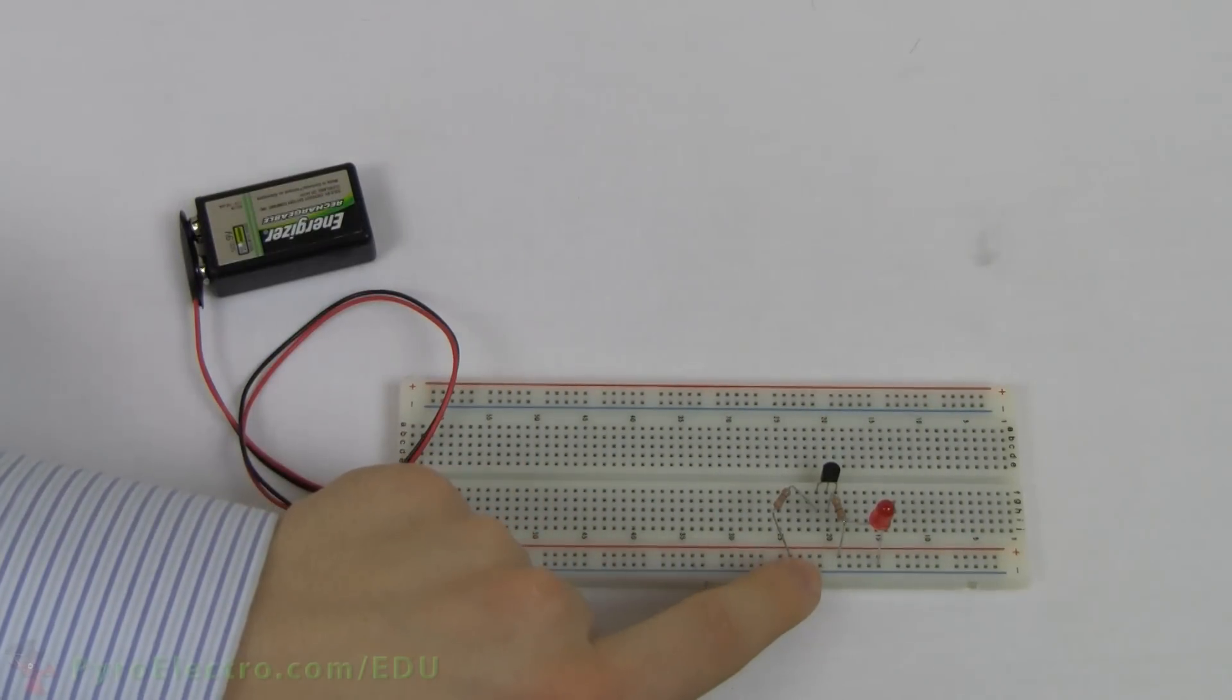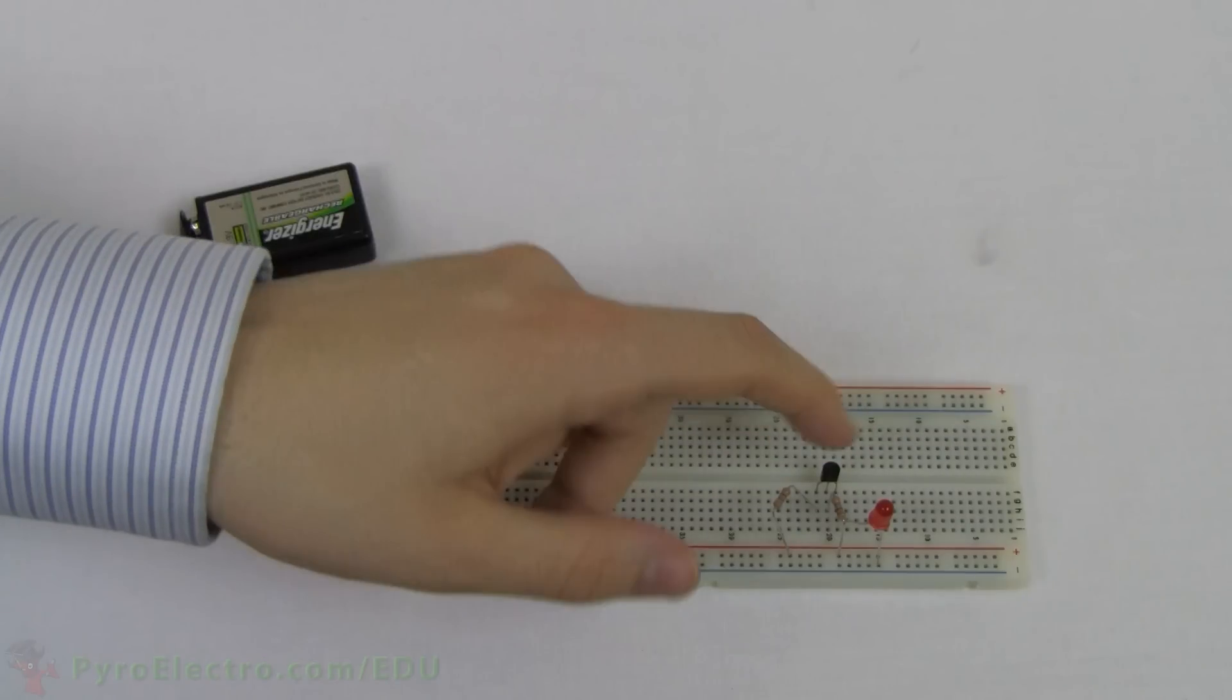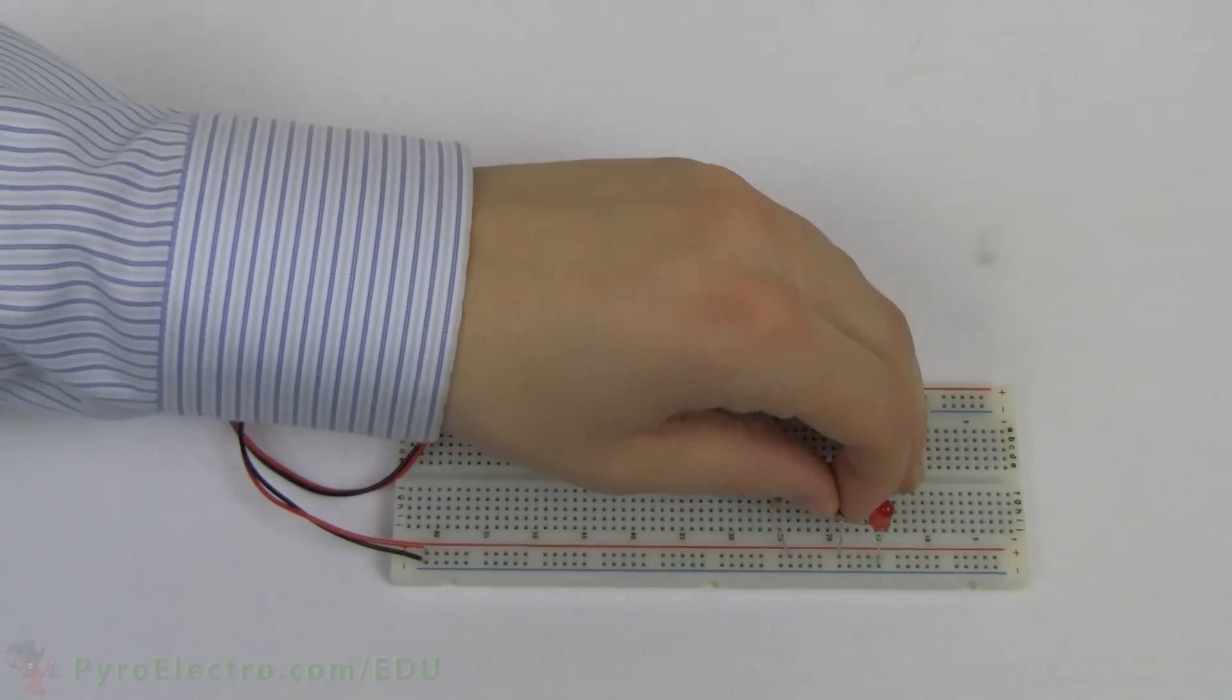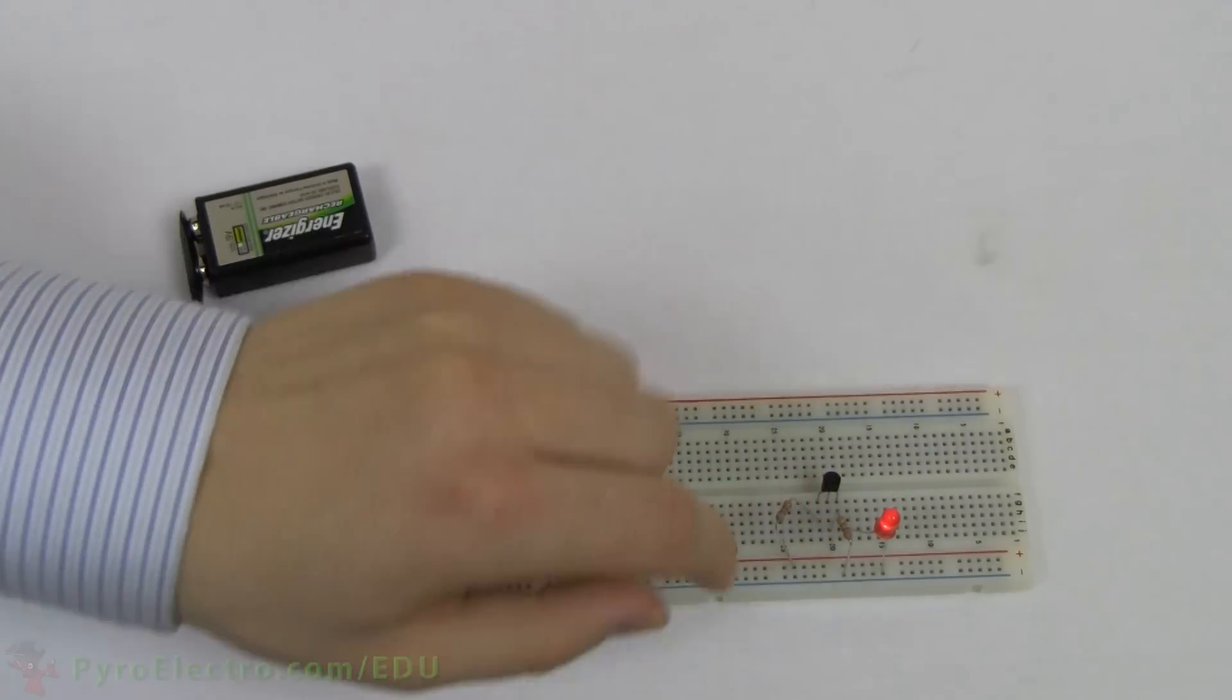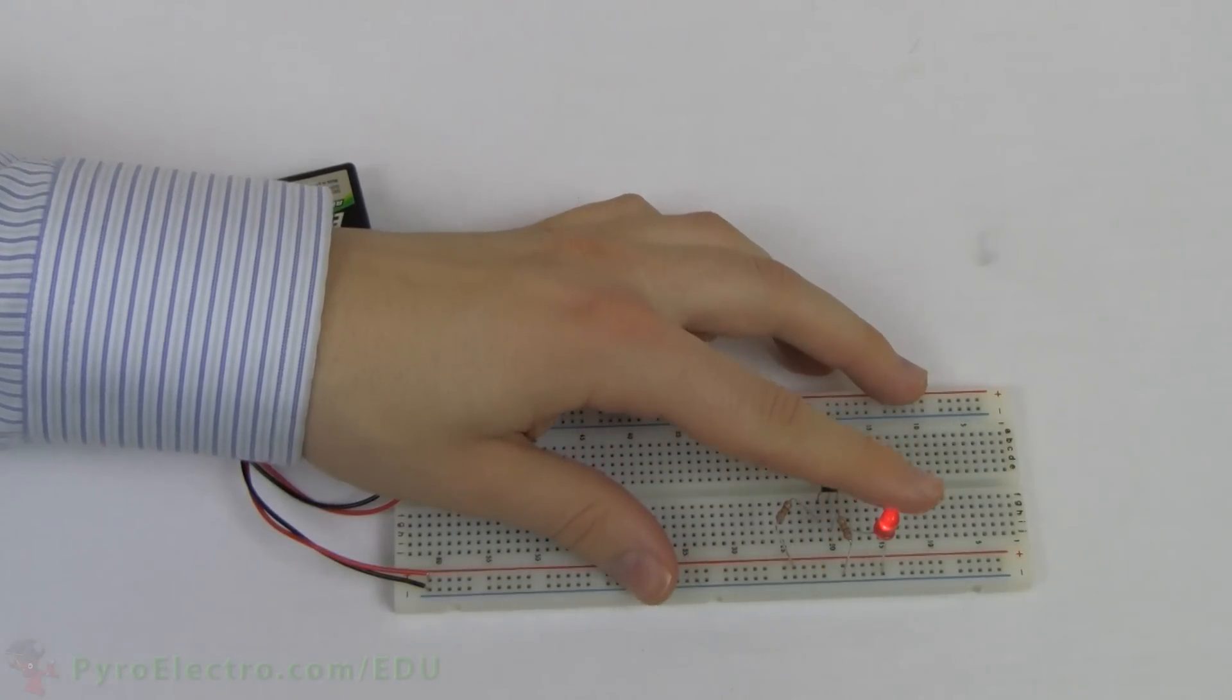You'll notice the LED doesn't turn on, as the transistor is in an off state. Again, this is because this PNP type transistor works opposite the NPN. So, if we remove the 470 ohm resistor and reconnect it to the transistor's base pin and ground, the transistor will turn on, as will the LED.